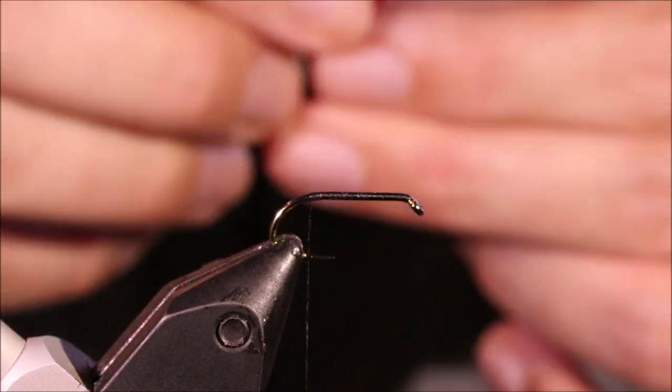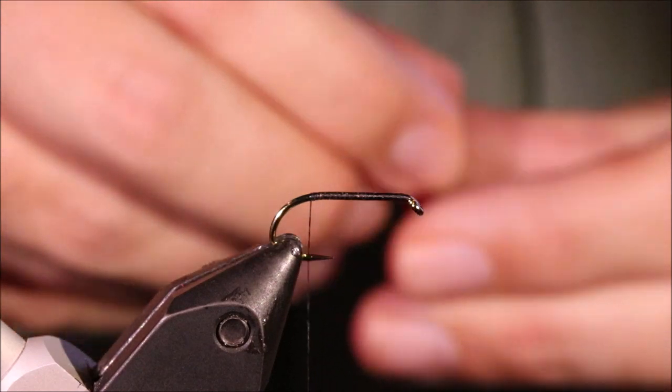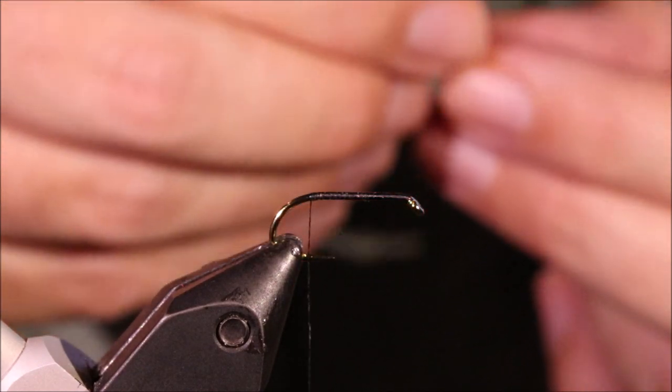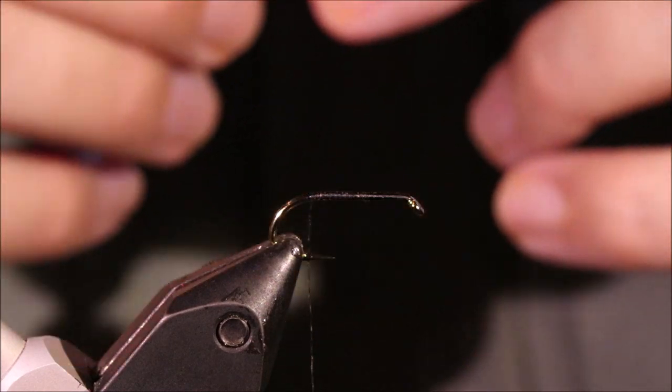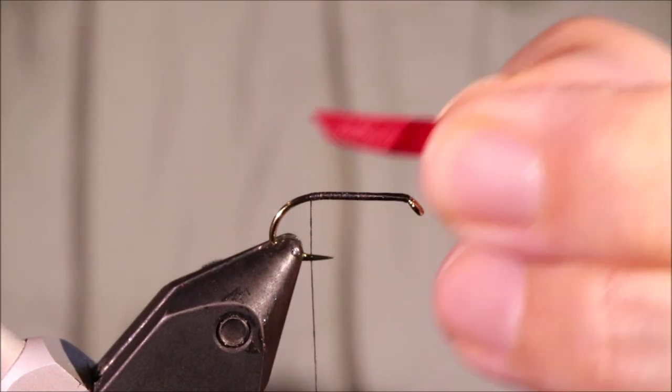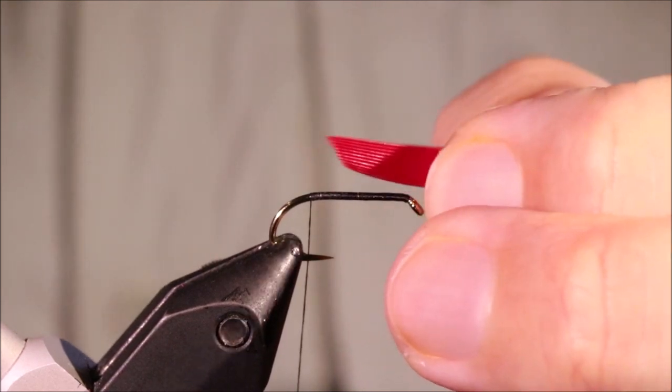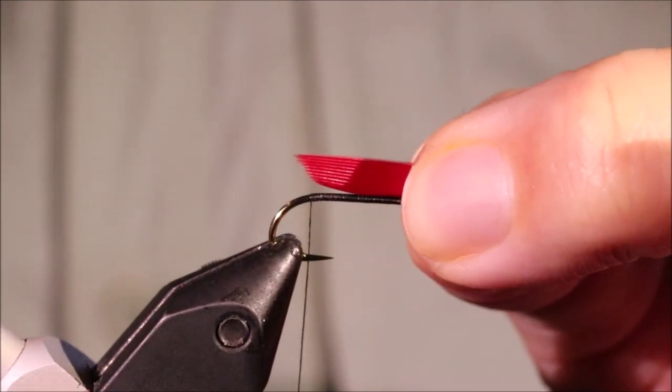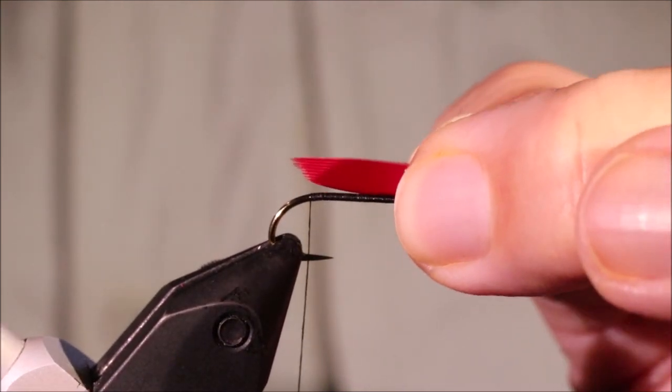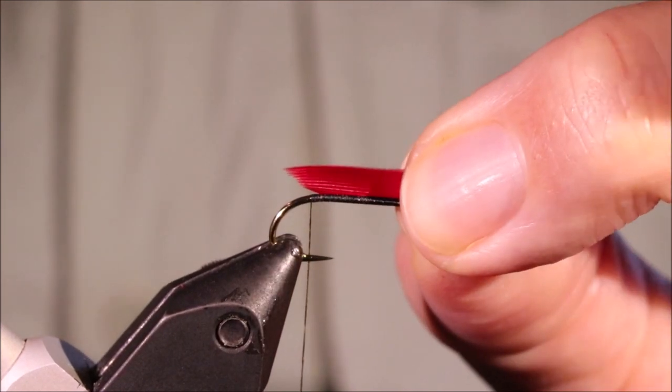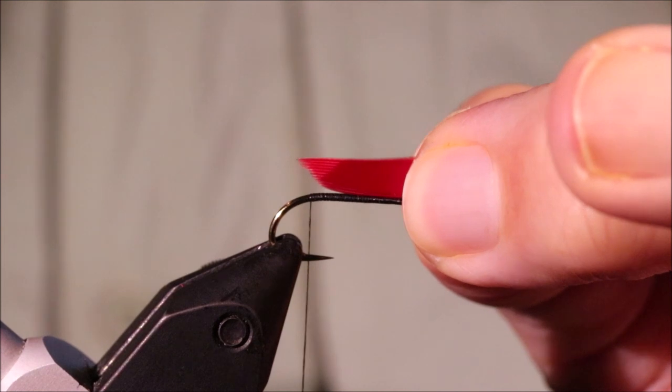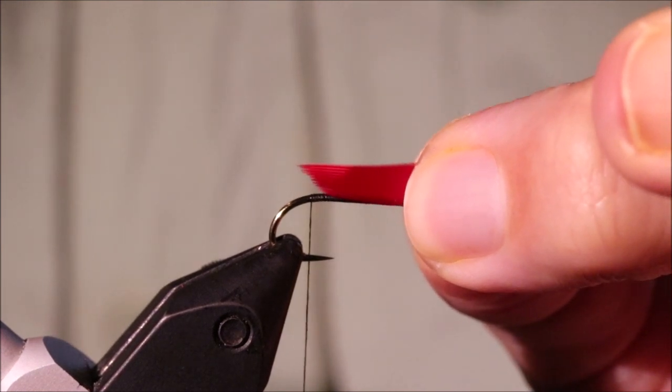So the tail, I'm using scarlet duck quills, but you can use all sorts of different stuff: goose, swan, I've seen marabou, floss, it's up to you. But I'm sticking with this, the original I believe was red ibis which we'll not be using, but any red fiber, hackle fibers if you wish.